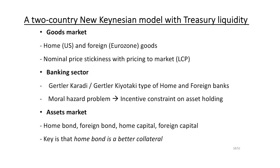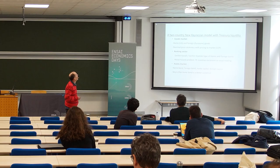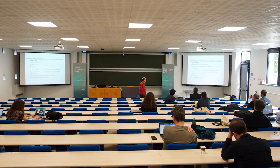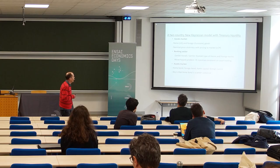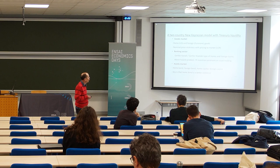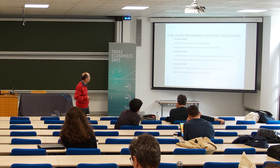We have a two-country New Keynesian model. The goods market is standard — home is the US, foreign is the Eurozone. There is nominal price stickiness and local currency pricing, which is an important part of the story. The banking sector follows Gertler-Kiyotaki, with an incentive constraint from moral hazard as a constraint on asset holding. The asset markets include home bond, foreign bond, home capital, and foreign capital. The key feature is that the home bond — the US bond — is assumed to be better collateral.